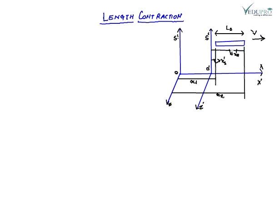Let us consider a rod laying on the X dash axis in the moving frame S dash. An observer in this frame determines the coordinates of its ends to be X₁ dash and X₂ dash. So the length L naught — which is the length of the rod as seen from S dash — will be L naught = X₂ dash minus X₁ dash.